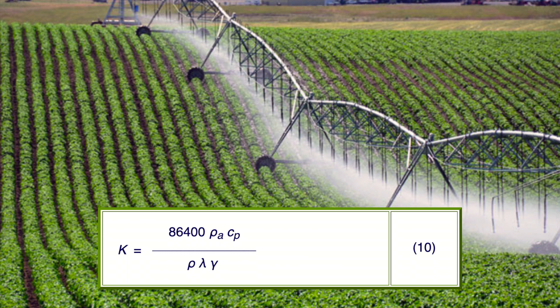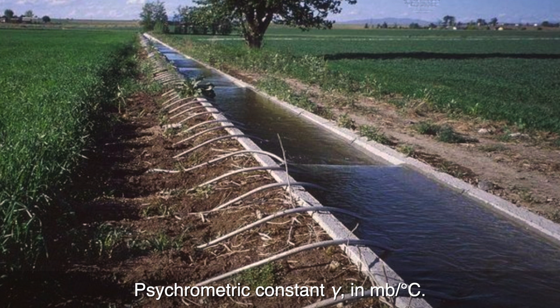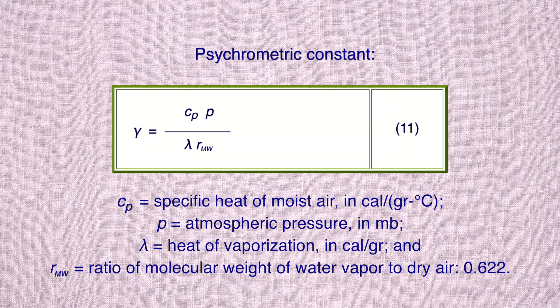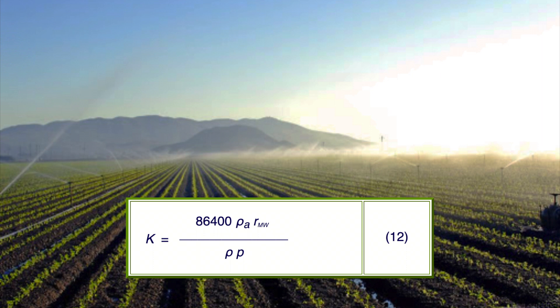In equation 10, the units of rho sub A, C sub P, rho, lambda, and gamma are the same as in equations 2 and 4. The psychrometric constant gamma in millibars per degree Celsius is given. Substituting equation 11 into equation 10, the constant k remains in units of seconds per day per millibar.